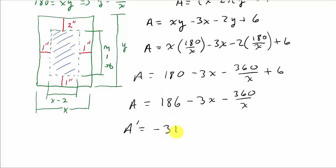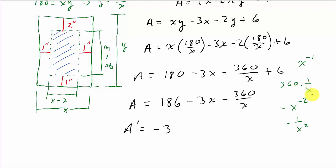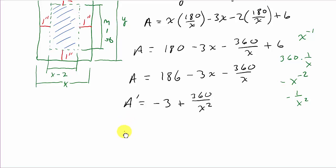All right, so let's take the derivative now. The derivative of 186 is zero, the derivative of negative 3x is negative 3. For the term 360/x, that's 360 times x to the negative 1, so its derivative is negative 360 times x to the negative 2, which is negative 360 over x squared. With the negative sign, that becomes plus 360 over x squared.